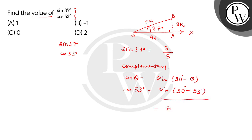which is equal to sin 37 degree. So we can say that cos of 53 degree is equal to sin 37 degree. And when we divide them, both values are the same. So we have the ratio of 1. The correct answer is option A. Thank you.